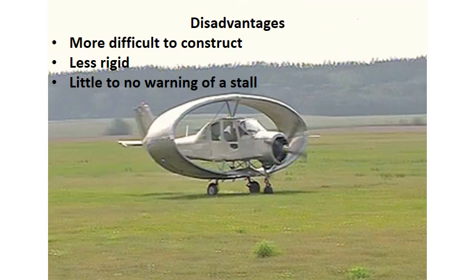Disadvantages of the elliptical wing: they are more difficult to construct and harder to make strong — they're less rigid than a typical straight wing. Also there's little to no warning of a stall in an elliptical wing aircraft, which is not very good depending on what you're trying to do.